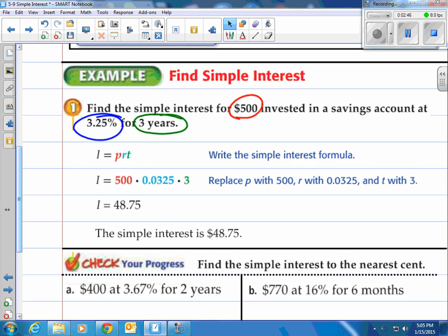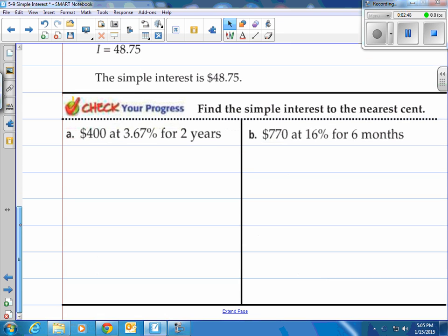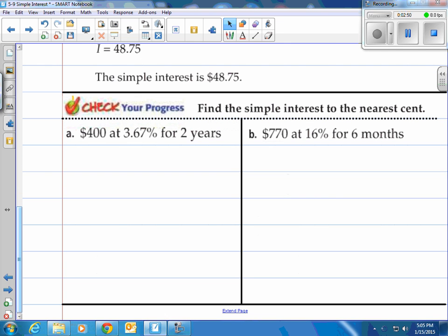Multiply all three of those together and the interest that you make over the three years would be $48.75. Simple as that. You try a couple. Come on back see how you do.